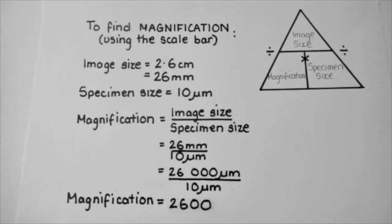So in order to find the magnification using the scale bar as a tool, we take the image size that we measured to be 2.6 centimeters or 26 millimeters, and we're going to divide it by the specimen size that we were told represented 10 micrometers. Now we have a small problem because our measurement is in millimeters, dividing millimeters by micrometers doesn't work, so we convert the millimeters to micrometers, that gives us 26,000 micrometers divided by the specimen size of 10 micrometers, we achieve a final magnification of 2600.